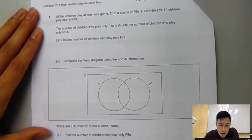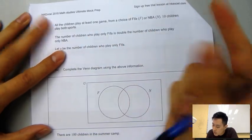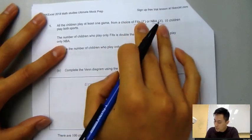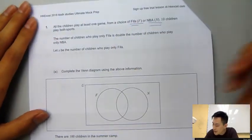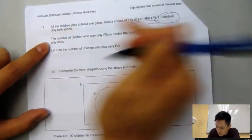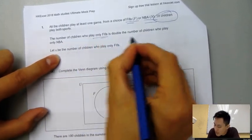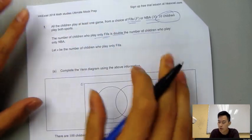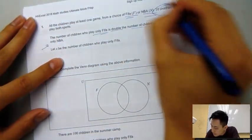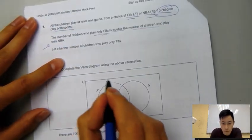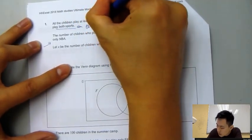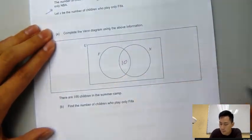First question I tip would be on Venn diagram. All the children play at least one game from a choice of FIFA and NBA. You must be familiar with these games, we have like new FIFA right now. So 10 children play both sports. Whenever you see a Venn diagram, F and N right here, both means the overlap. So normally what I do is immediately write the number right here, so it's 10.